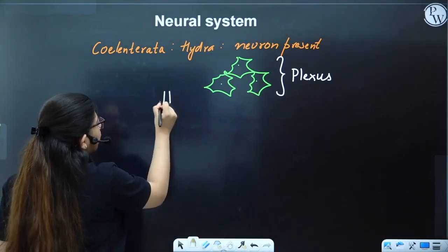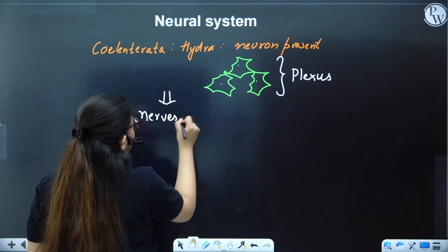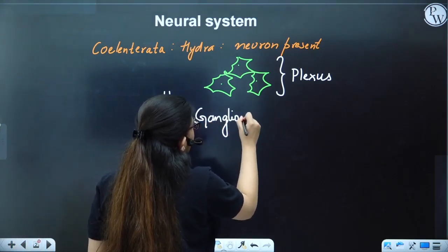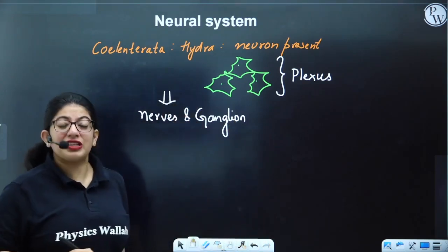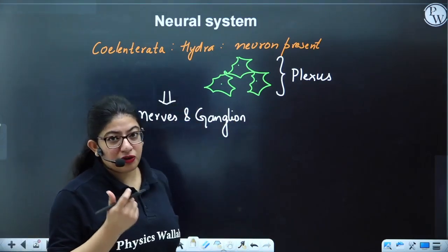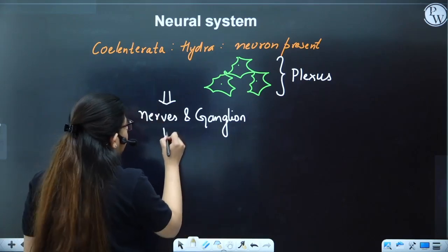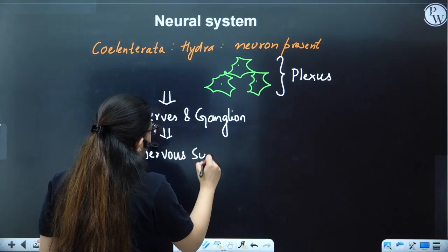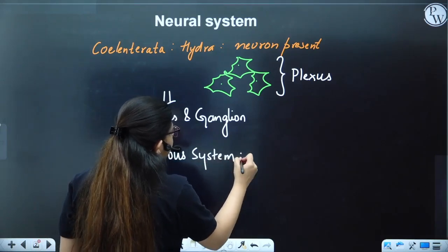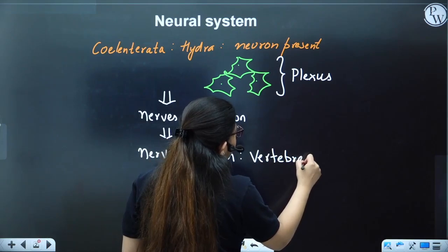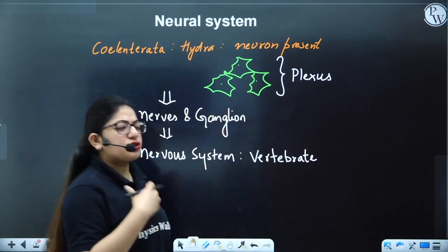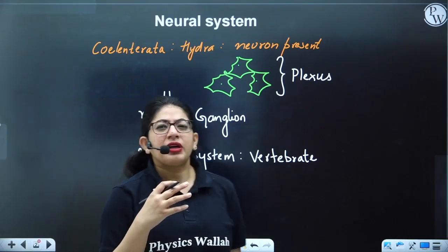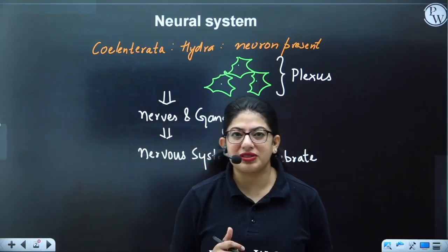After evolution, nerves and ganglions were formed. For example, in cockroach, ganglions are present. Group of nerves are essentially group of neurons. Later on, a complete nervous system was formed in vertebrates. Since we are vertebrates and we consider ourselves highly developed organisms, we have a complete neural system.